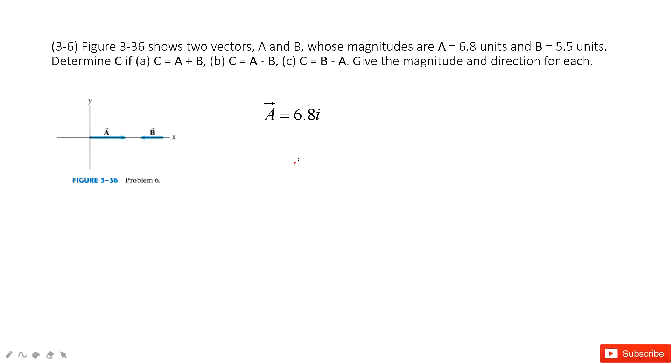In this one, this is still the calculation for vectors. They tell us we have two vectors A and B, and they tell us the magnitude of A and B. Then let's do the calculations.